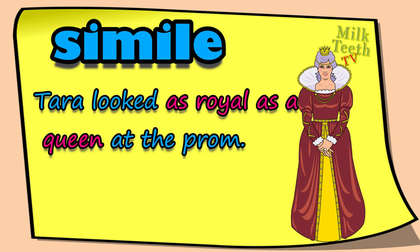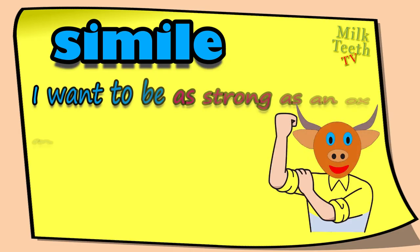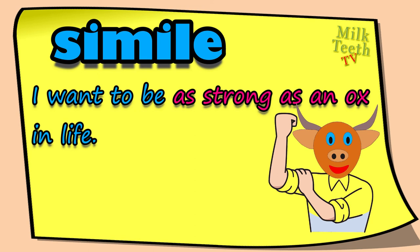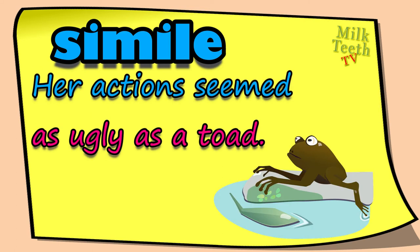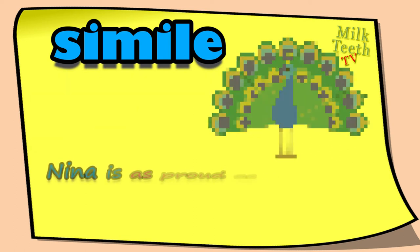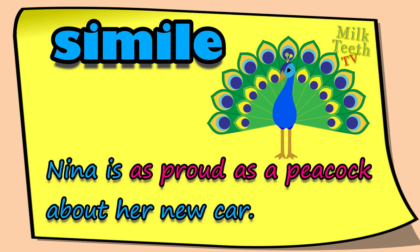'Kevin acted as funny as a clown in the class' — simile: as funny as a clown. 'Tara looked as royal as a queen at the prom' — simile: as royal as a queen. 'I want to be as strong as an ox in life' — simile: as strong as an ox.